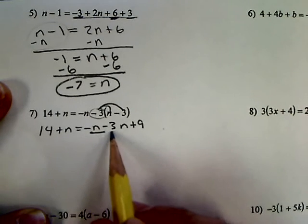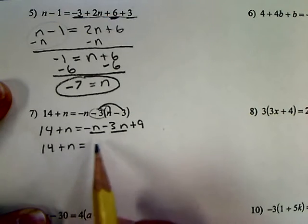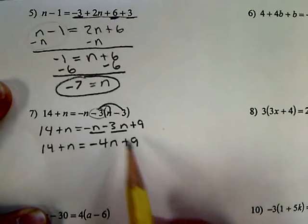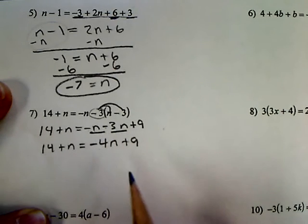Combine like terms. So that's 14 plus n equals negative 4n plus 9. Just added 1, negative 1 plus, negative 1 minus 3 is negative 4.